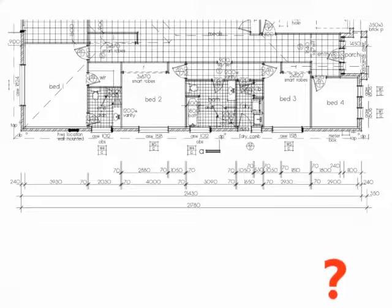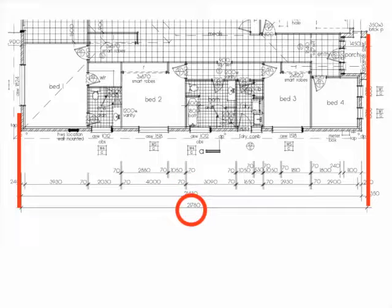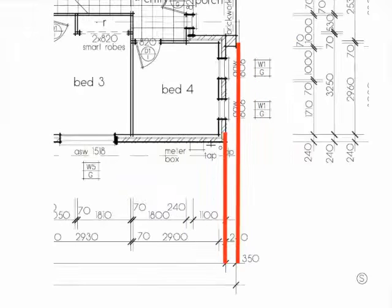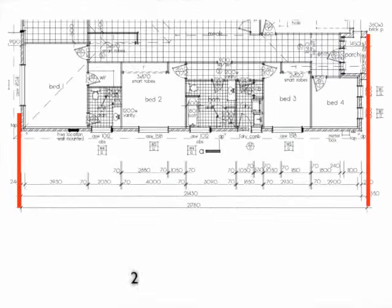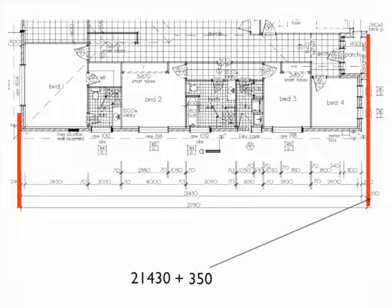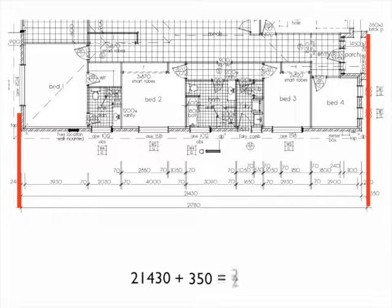This dimension actually indicates the length of the outside wall out to the end of the porch. You see here that the porch extends past the building by 350mm. So if we look at the dimension of the wall as being 21,430mm, then add to that figure the 350mm that the porch extends by, you find the outside dimension is 21,780mm.